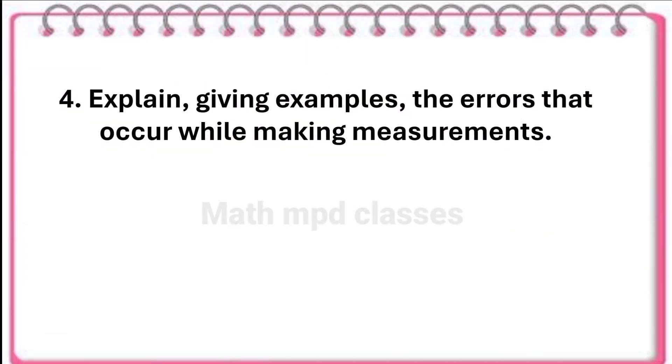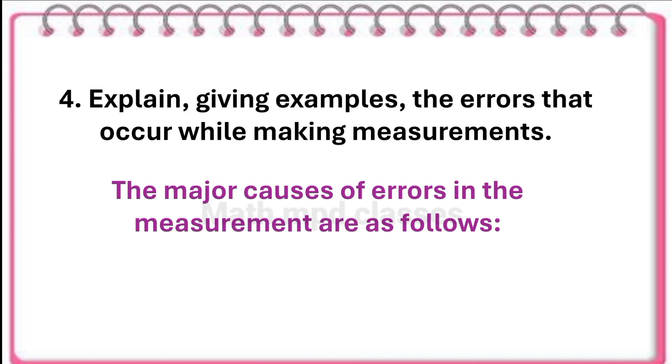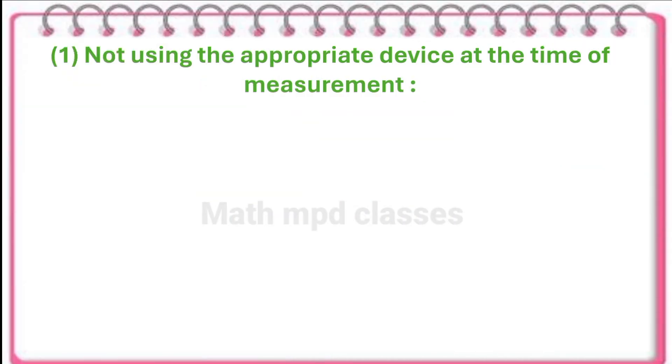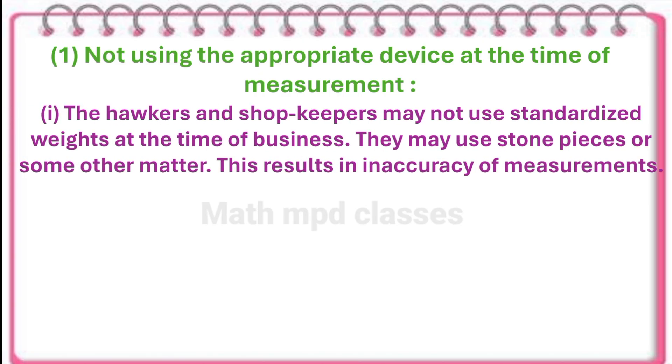Question number four: explain, giving examples, the errors that occur while making measurements. The major causes of errors in the measurement are as follows. First, not using the appropriate device at the time of measurement.